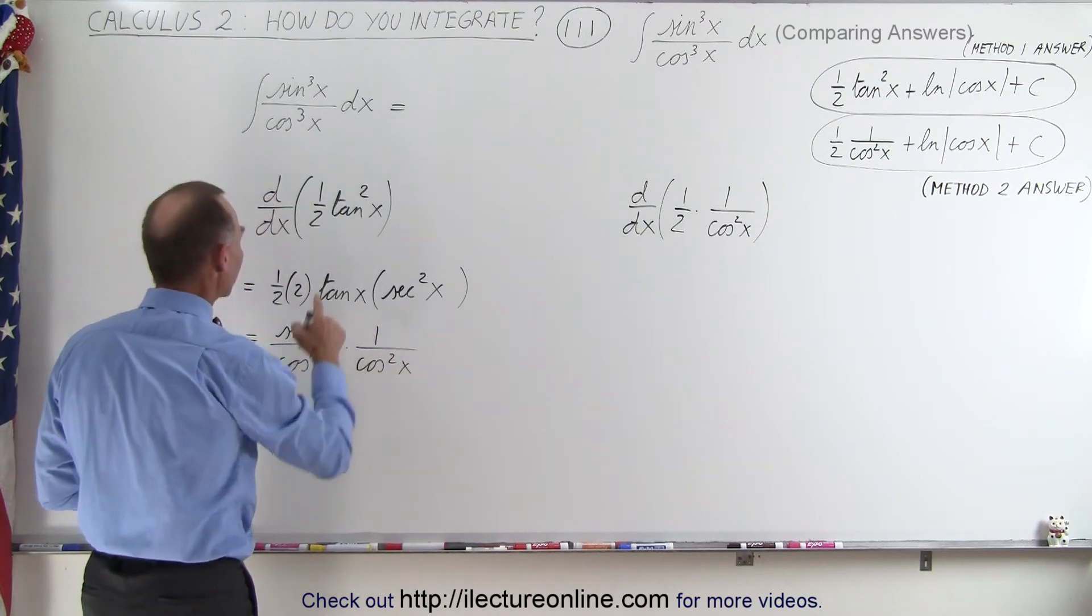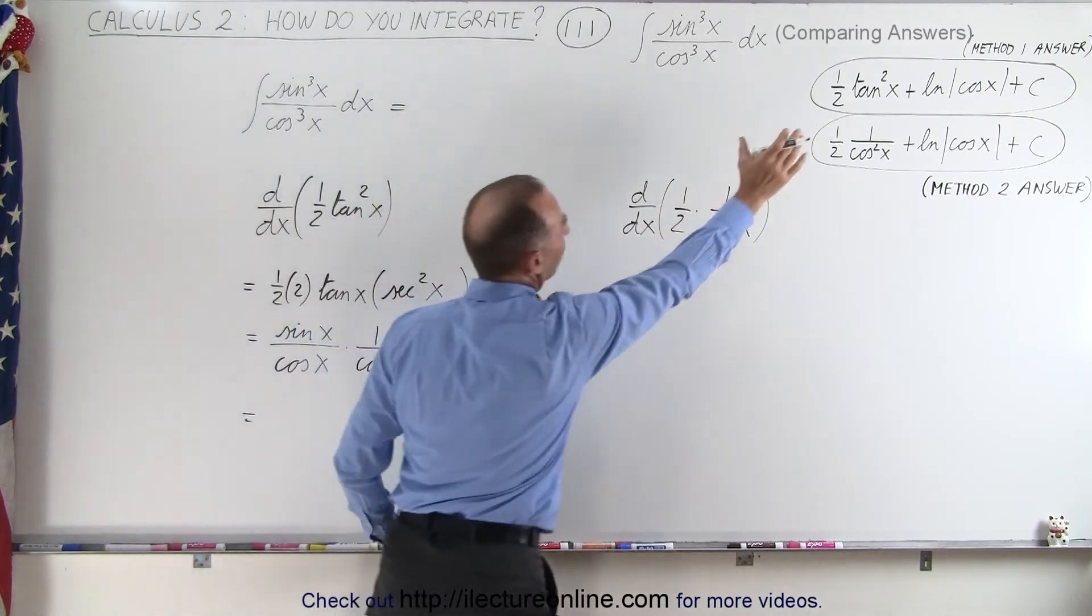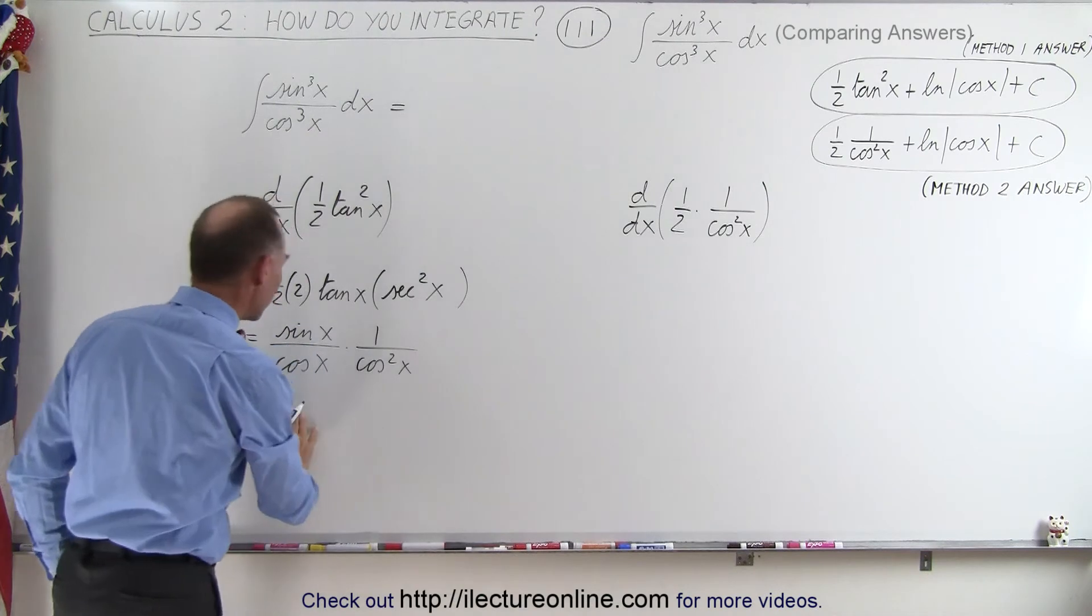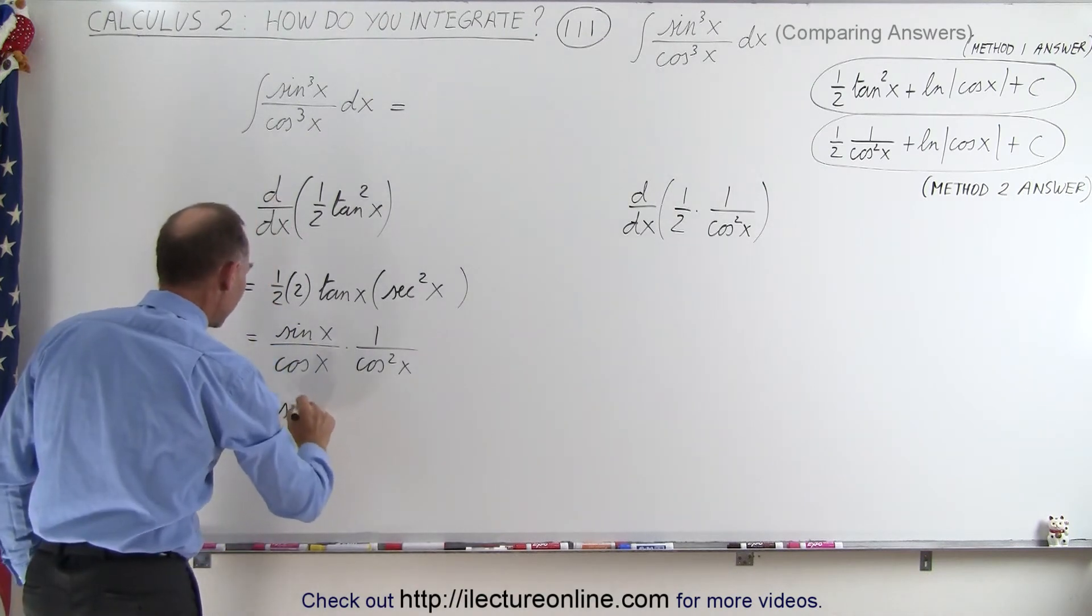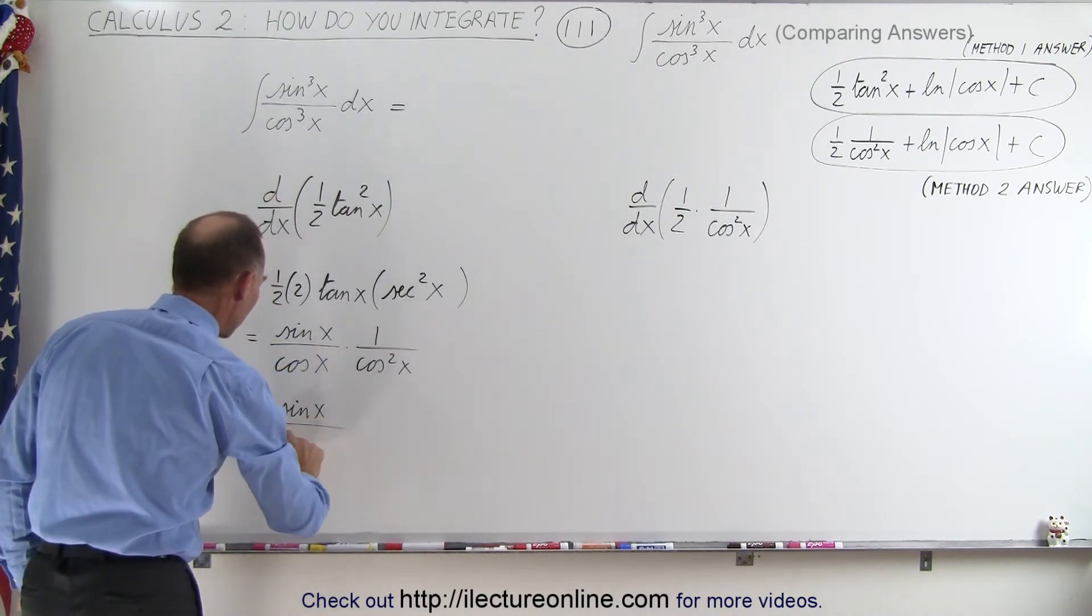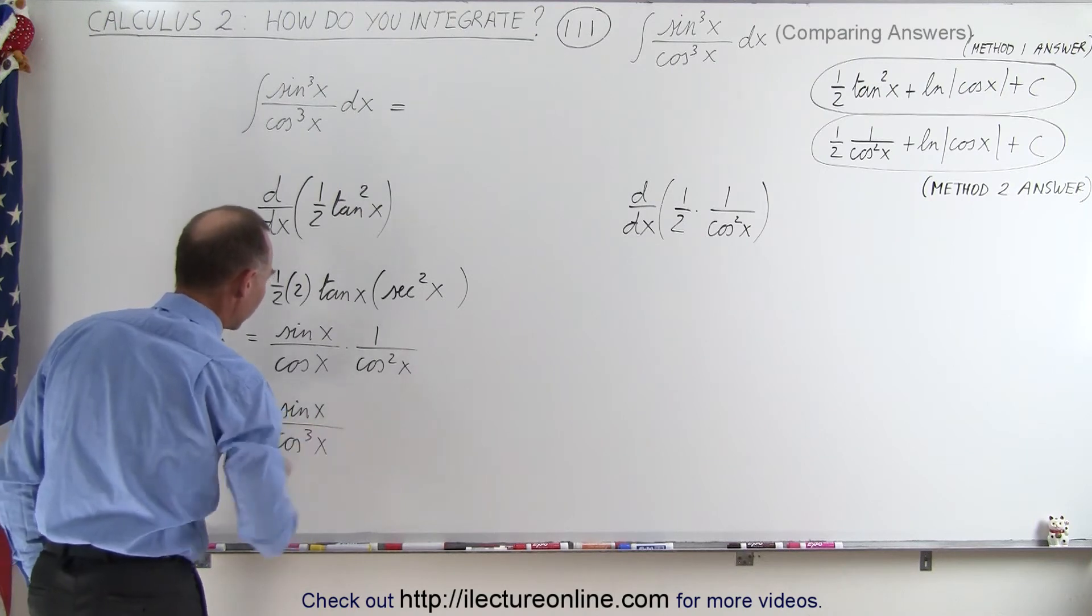So the result here when we take the derivative of the first part of the answer from method one we end up with the sine of x divided by the cosine cubed of x.